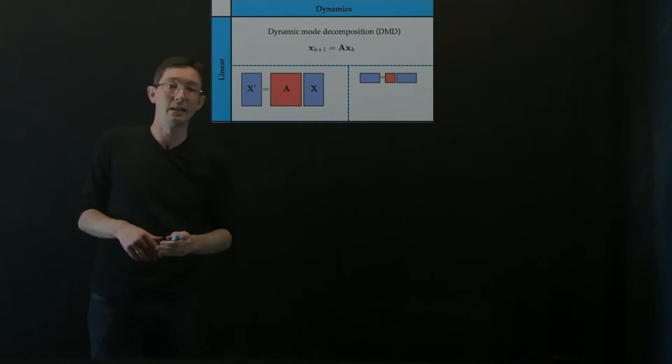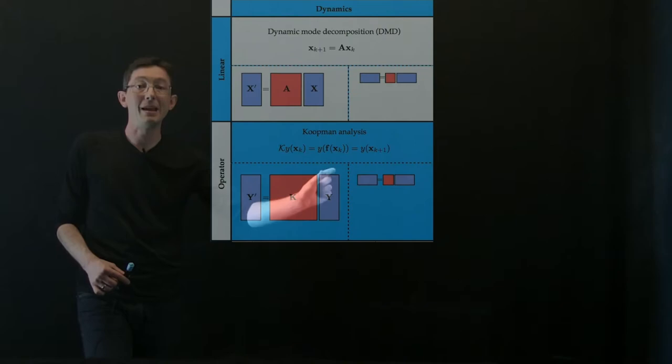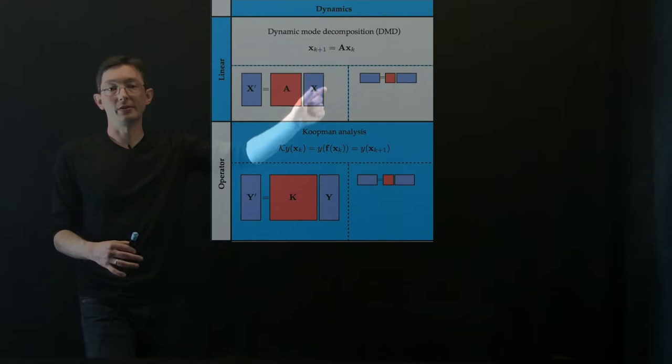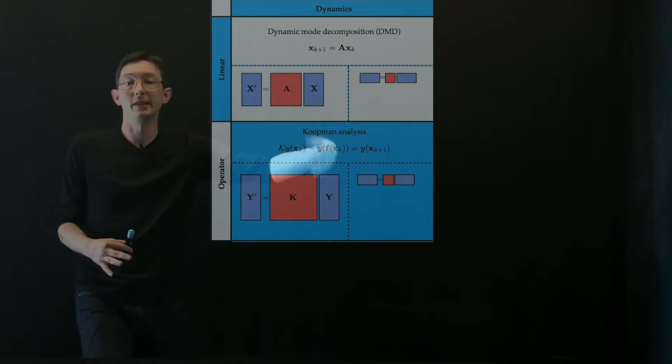Now, you can also extend this to the Koopman analysis, so this is what's known as extended DMD, where now what I'm going to do is build an augmented set of measurements Y. This is even bigger than my original state, and this is augmented with nonlinear measurements of my system. This is the extended DMD regression, and I can get an even bigger regression operator K. And again, I might want to do this in some reduced coordinate system.